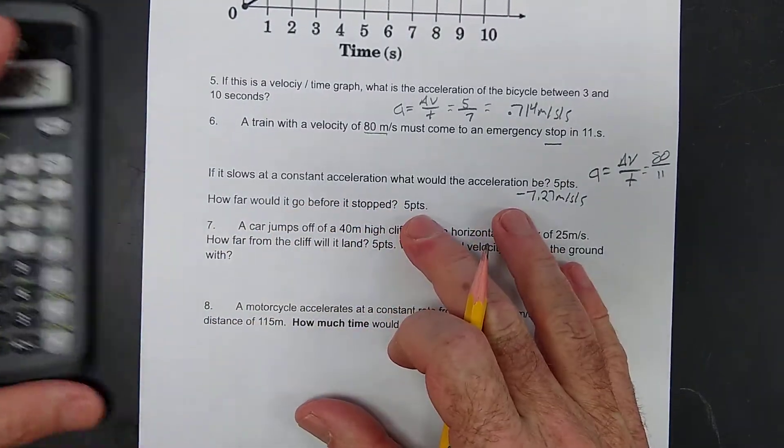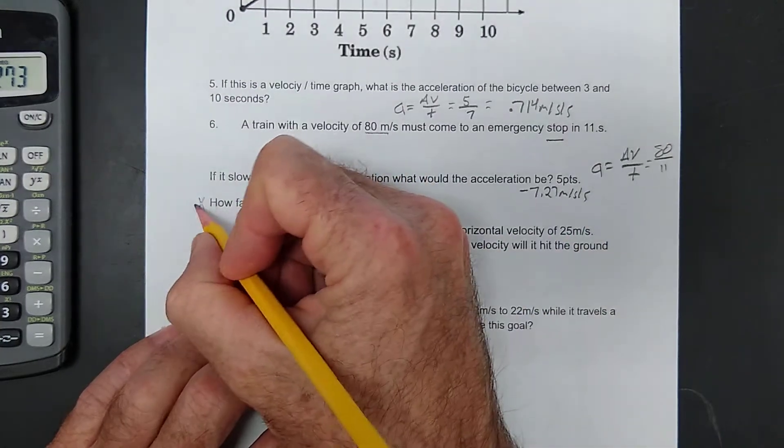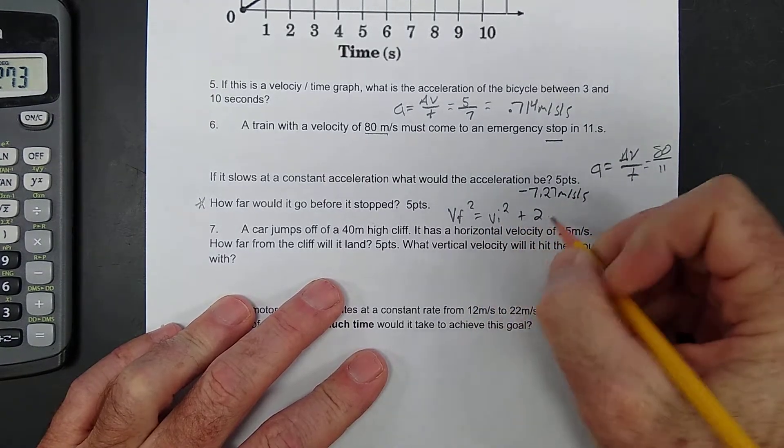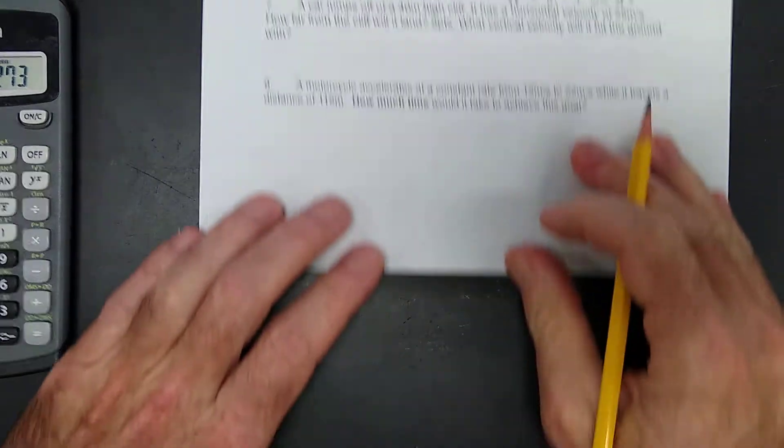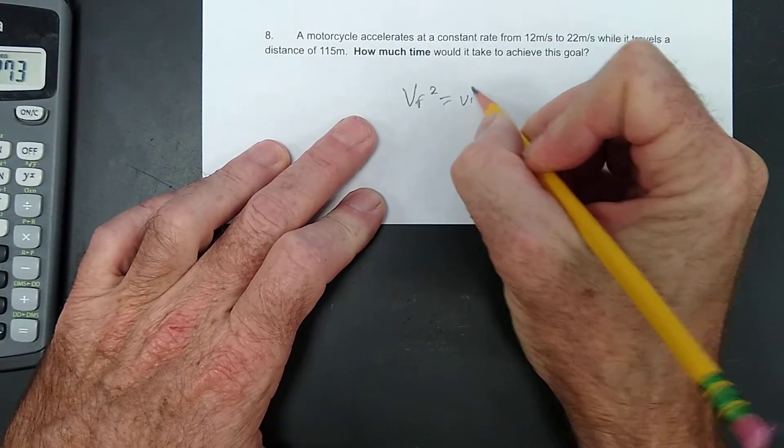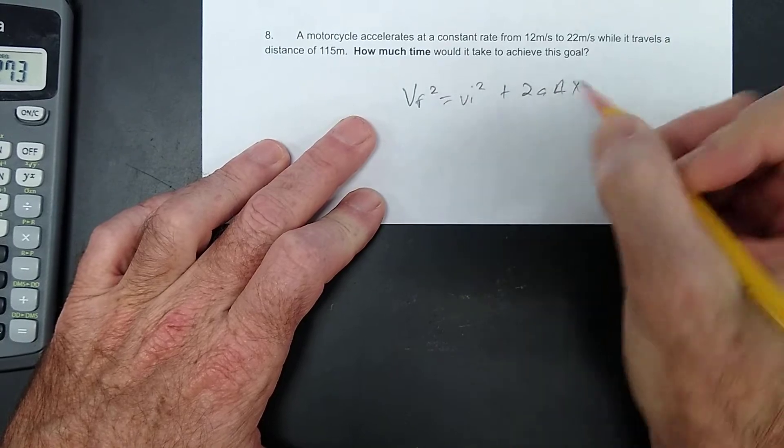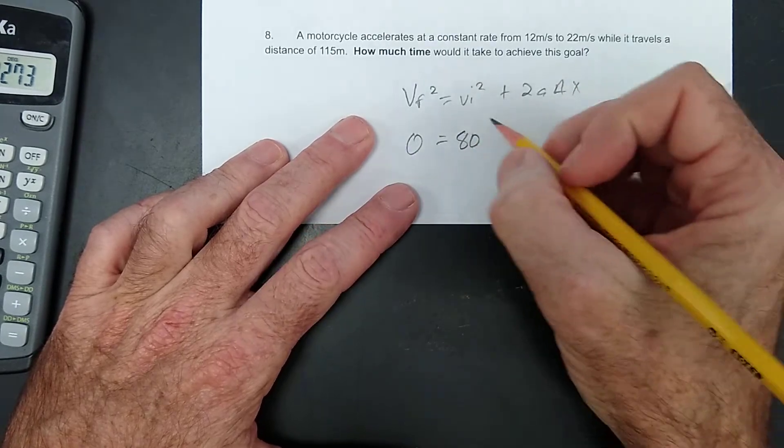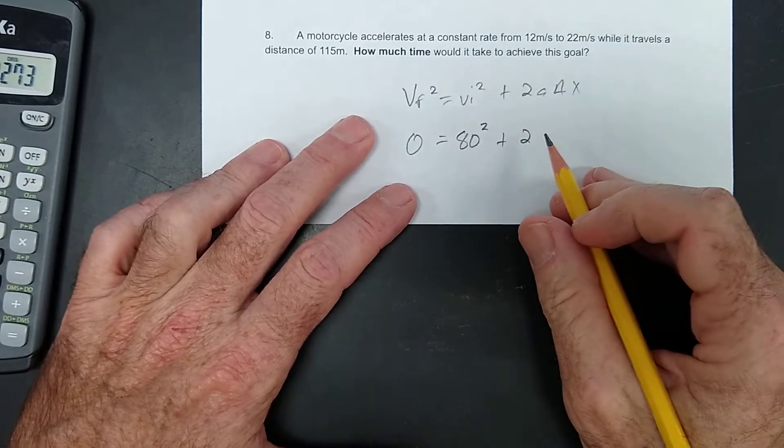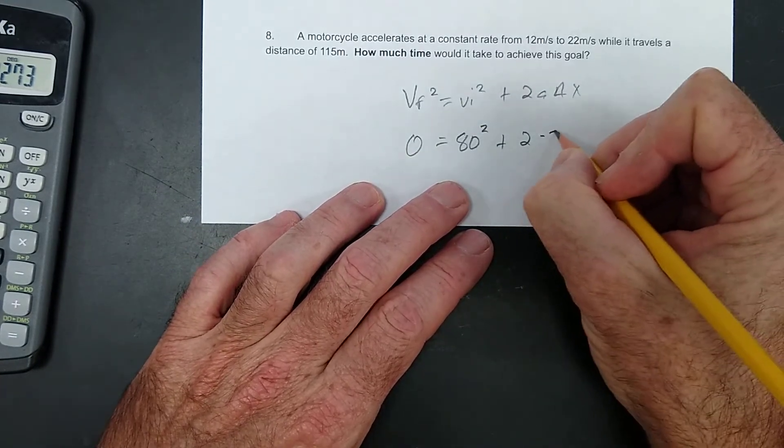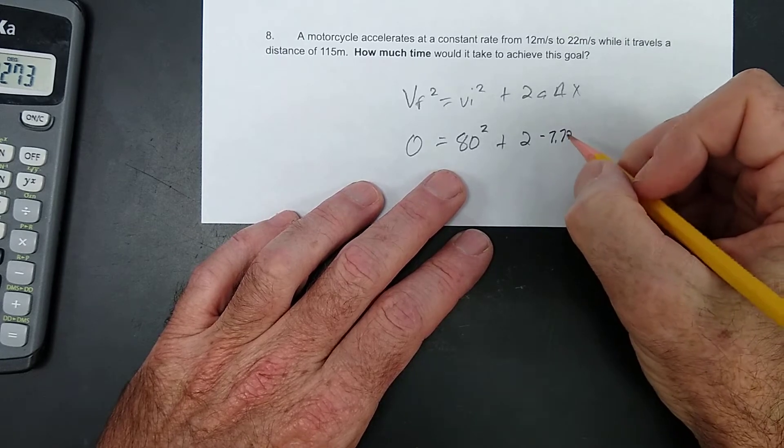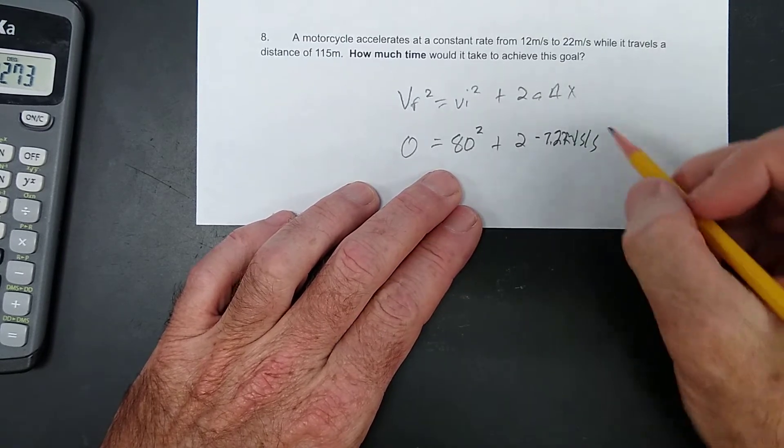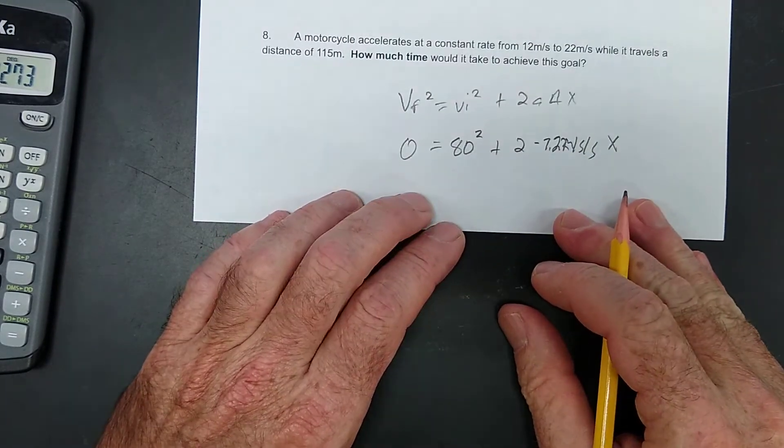Alright? How far would it go before it stopped? Okay. Now, this is the formula we haven't used as many times. We could say VF squared equals VI squared plus 2A delta X. Let's look at that formula. VF squared is equal to VI squared plus 2A delta X. Its final velocity was zero. Its initial velocity was 80, right? 80 squared plus 2. Its acceleration we calculated was negative 7.27 meters per second per second. And then, X is how far would it go before it stopped?